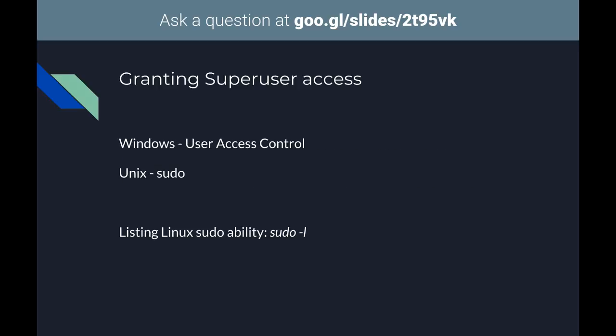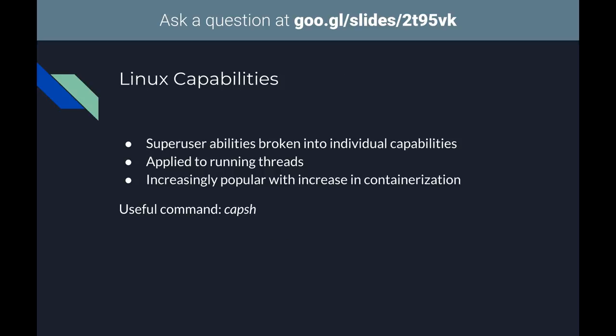The mechanism for securely allowing super user access: Windows has the UAC prompt, which pops up and annoys you when installing software. Unix has sudo. If you're on a box and trying to enumerate, `sudo -l` is a useful way to see what permissions you have with sudo.